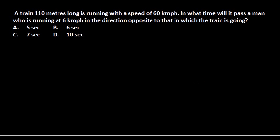Okay guys, now let's solve this problem. It's a very simple problem but slightly different. A train of length 110 meters is running with a speed of 60 kmph. In what time will it pass a man who is running at 6 kmph in the direction opposite to that which the train is going?